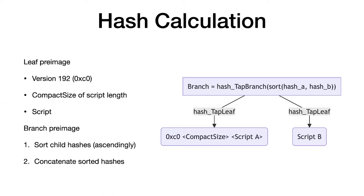By the way, if the other child is not a tap leaf but a tap branch, you still treat the hashes the same way: you have a hash of the leaf and a hash of the branch, you sort them, and that gives you the hash of the overlying branch. When you're at the branch hashing step with hash A and hash B, you don't need to care at all what the pre-images of those two hash inputs were.